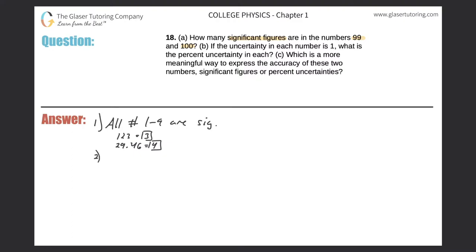Rule number two: all trapped zeros — trapped between numbers — are significant. For example, the value 2004: the two and the four are non-zero digits, so rule one says they're always significant. The two zeros in between are considered trapped because they're between two numbers. So the answer would be four significant figures.